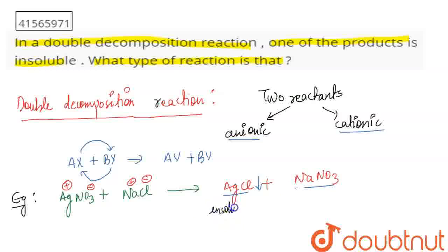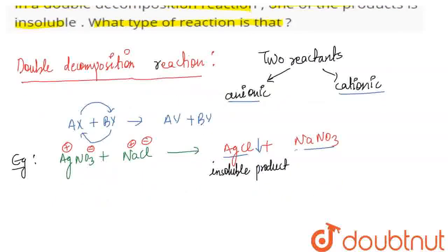So what happens in a double decomposition reaction? One product is your insoluble product. When you see an insoluble product, this is a precipitation reaction. This is your final answer. Thank you.